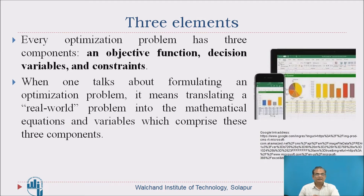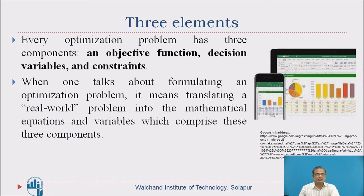There are three important elements involved in optimization. Every optimization problem has these three components: an objective function, decision variables, and constraints. These three elements will always be present when dealing with optimization problems. Formulating an optimization problem means translating a real-world problem into mathematical equations and variables that comprise these three components.